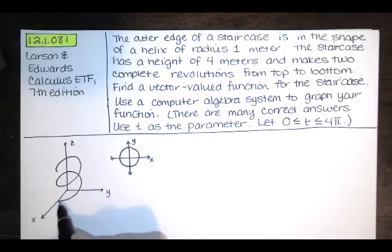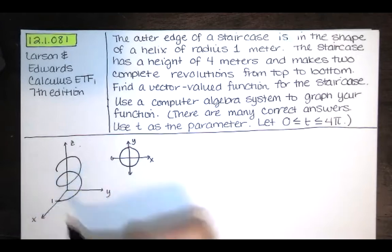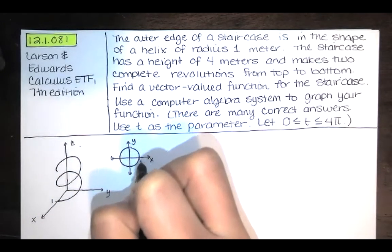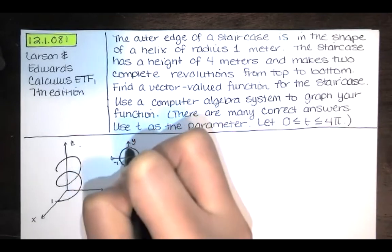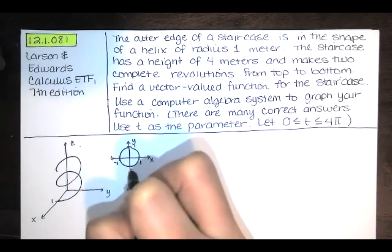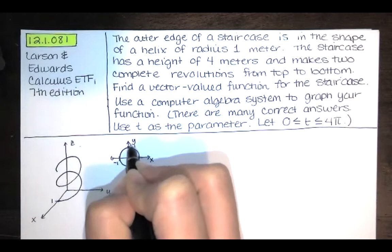So I just decided to start here at x equals 1, y equals 0, z equals 0. So I'm starting right here at this location. And then as t increases, we're going up.